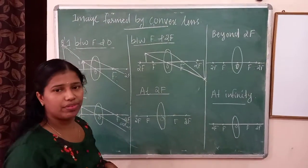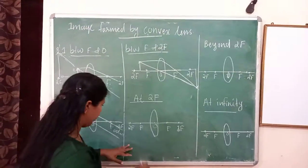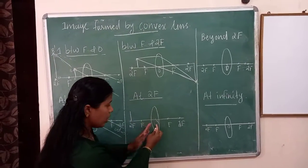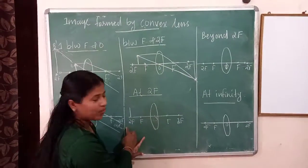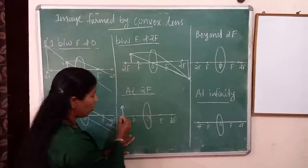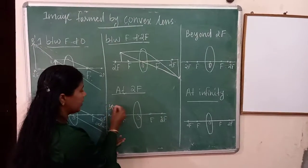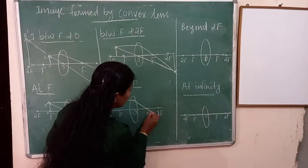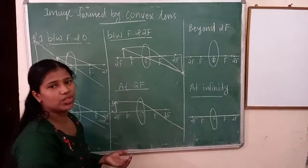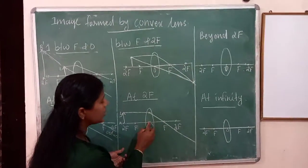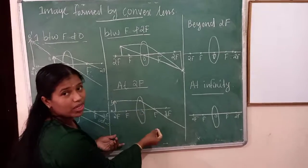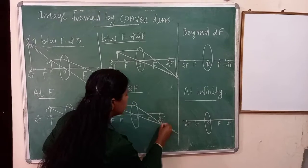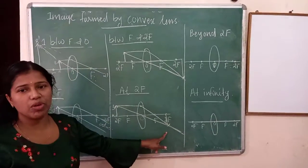Fourth case: object is at 2F. We draw optical center with F and 2F marked. Object AB is at 2F. A ray parallel to the principal axis passes through the focus after refraction. A ray through the optical center goes straight. The image is formed at 2F on the other side of the lens.